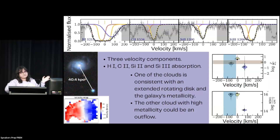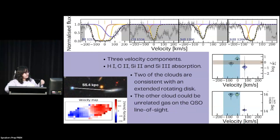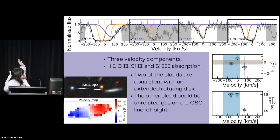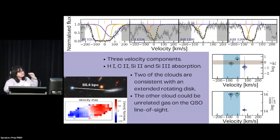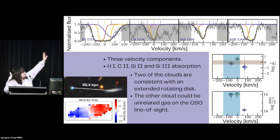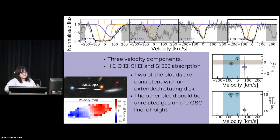For the other galaxy in this pair — the edge-on galaxy — the impact parameter is 55 kiloparsecs. Again, we have the velocity and metallicity ranges for reference. We see that two of the clouds are consistent with an extended rotating disk. The other cloud is not consistent with anything and could be unrelated gas in the quasar line of sight, which we believe because it has a lower column density.